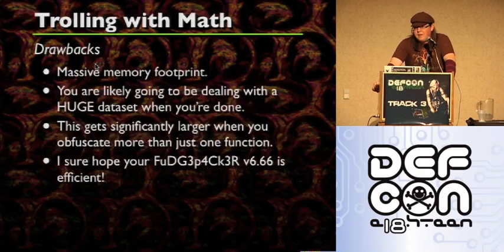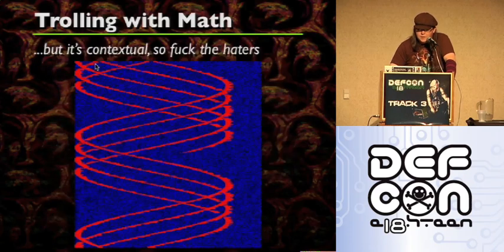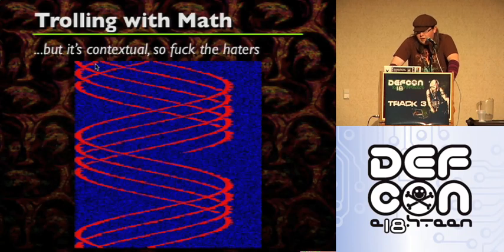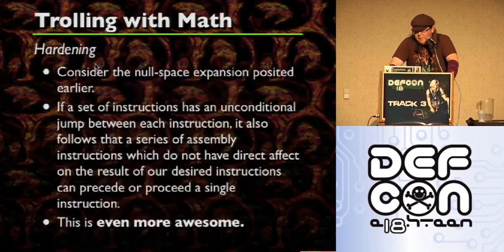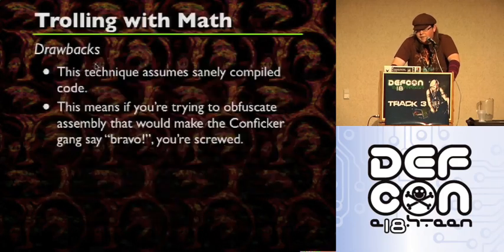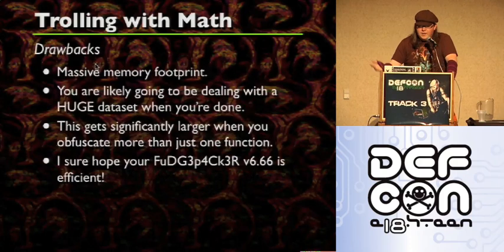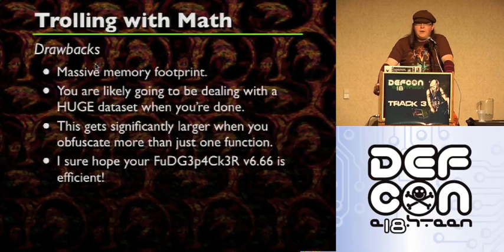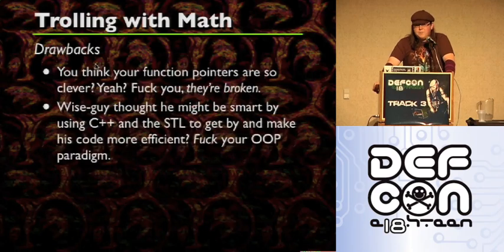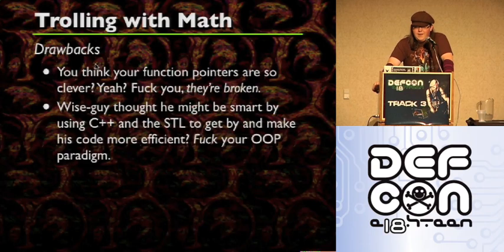There's also a massive memory footprint. Let me go back to the image — there's a lot of blue space here and not a lot of red space. All the red space is code; all the blue space is overhead. Sure, there are things you can do to make it more efficient, but there's obviously a whole lot of extra space that's going to be an issue. It's going to have a massive memory footprint if you want to do it right, or if you want to isolate out the instructions. You're dealing with a gigantic data set that gets significantly larger when you obfuscate more than just one function. Also, function pointers are unpredictably messed up — sometimes they're good, sometimes they're not, it really depends on what you're doing.